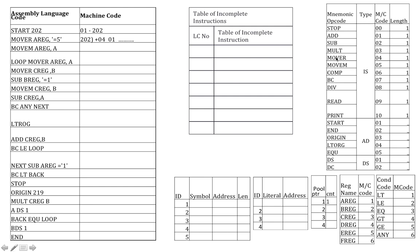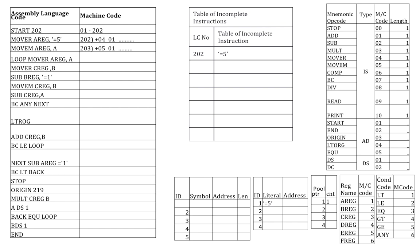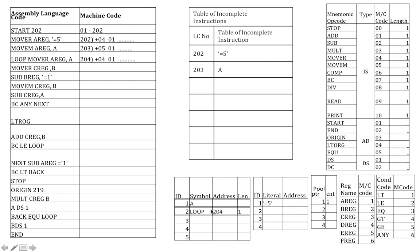Then instruction MOVER has machine code 04, AREG is register number 1, so machine code is 04 01. The literal =5 is added into the literal table, but its address is absent so it is shown incomplete and added into the table of incomplete instructions. Similarly, MOVEM which is 05, AREG which is 01, and A which is a symbol added into the symbol table — it is forward referenced so it is shown as incomplete. Then LOOP, which is a symbol, gets added into the symbol table with address 204. MOVER which is 04, AREG which is 01, A which is forward referenced is kept blank and added into the table of incomplete instructions.